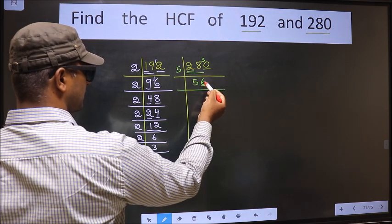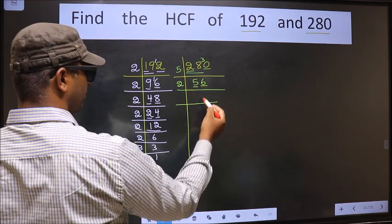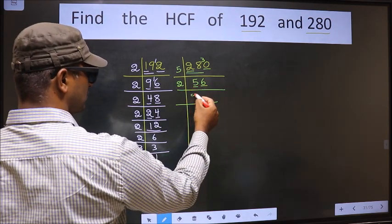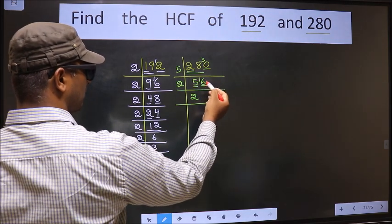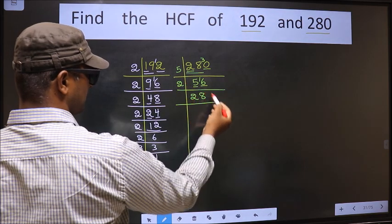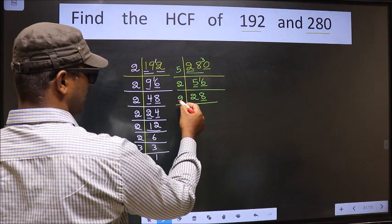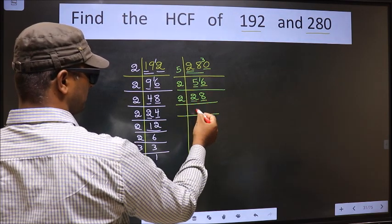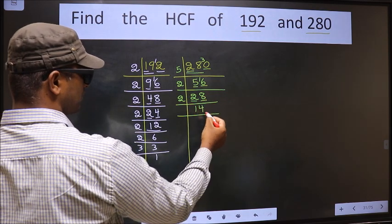For this number, last digit 6, even, so we take 2 here. The first number is 5; a number close to 5 in the 2 table is 2 times 2, which is 4. 5 minus 4 is 1, carried forward making it 16. When do we get 16 in the 2 table? 2 times 8 is 16. For this number, last digit 8, even, so we take 2 here. The first number is 2; when do we get 2 in the 2 table? 2 times 1 is 2. The other number 8: when do we get 8 in the 2 table? 2 times 4 is 8.